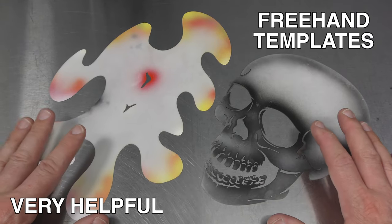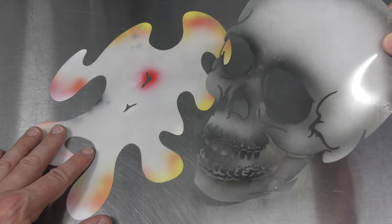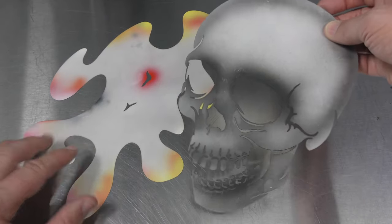Freehand templates like this are super helpful when you're airbrushing. They allow you to create really quick designs by just holding the template and spraying over it.